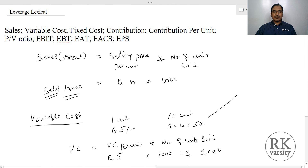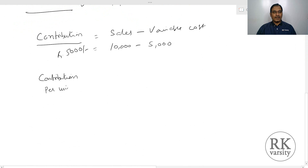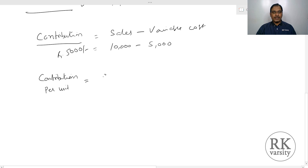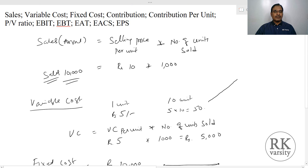Next is contribution per unit. Contribution per unit is selling price per unit minus variable cost per unit. In our example, the selling price is Rs.10 and variable cost is Rs.5, so contribution per unit is Rs.5.